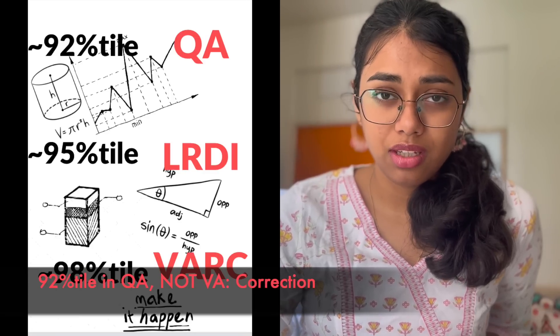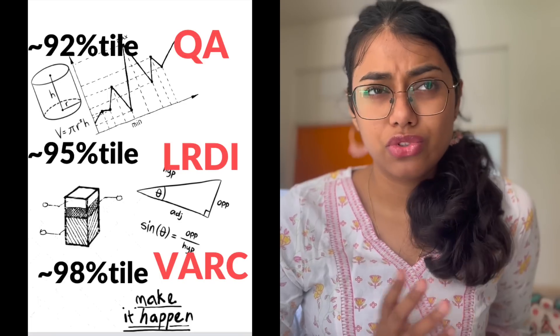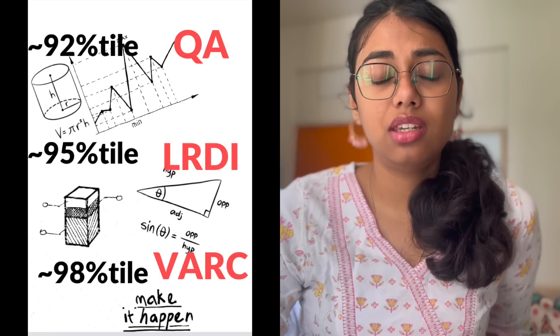So I took the CAT again and I got a 97.56, with 97.8 something in verbal, 95 in DILR, and around 90 in quant. I got calls from all IIMs except Bangalore and Calcutta. I converted all except Lucknow and Kozhikode where I got waitlisted in both cases, and yeah, that's a little bit about my profile.